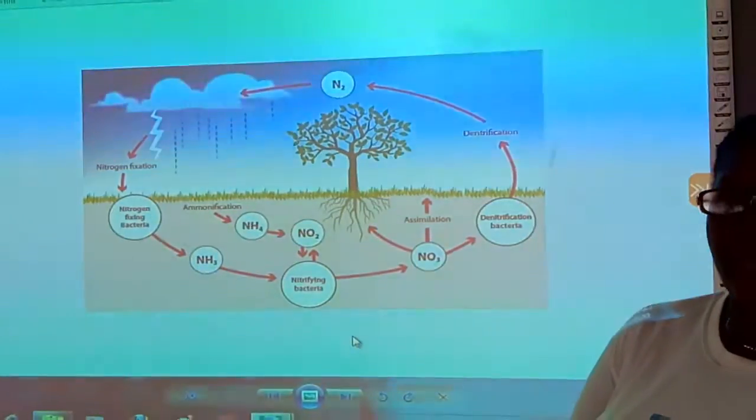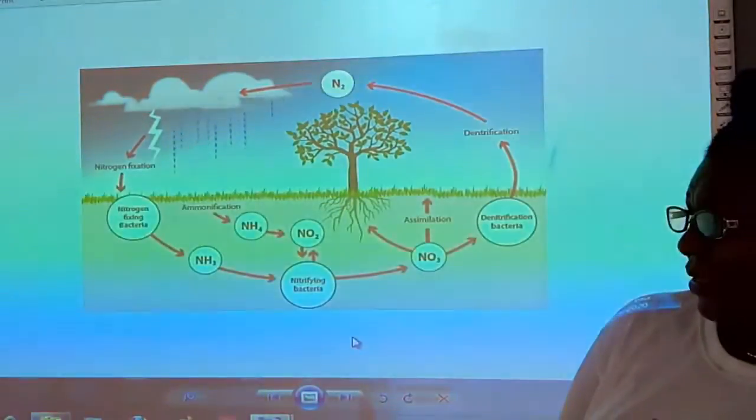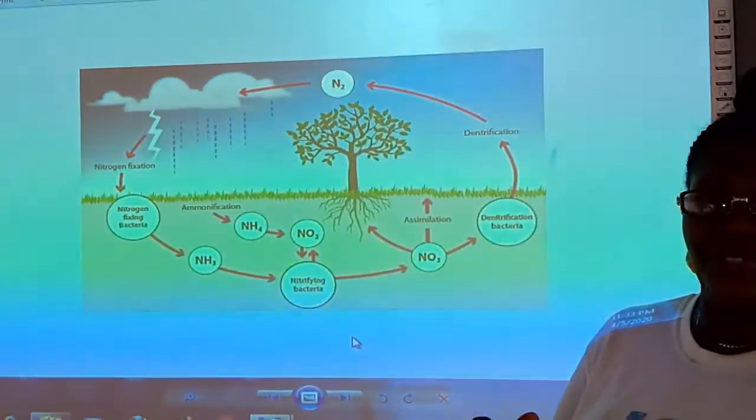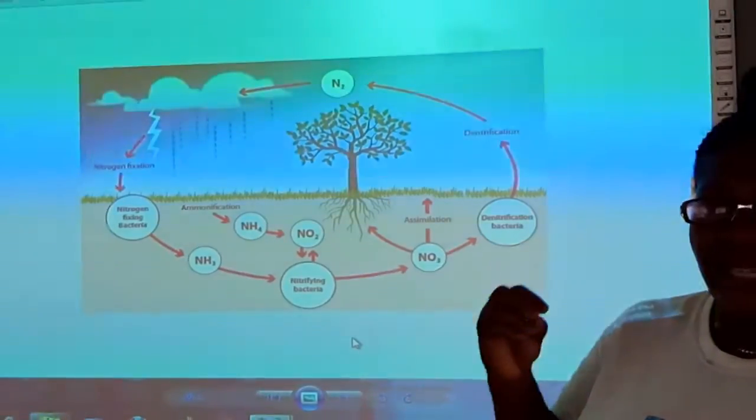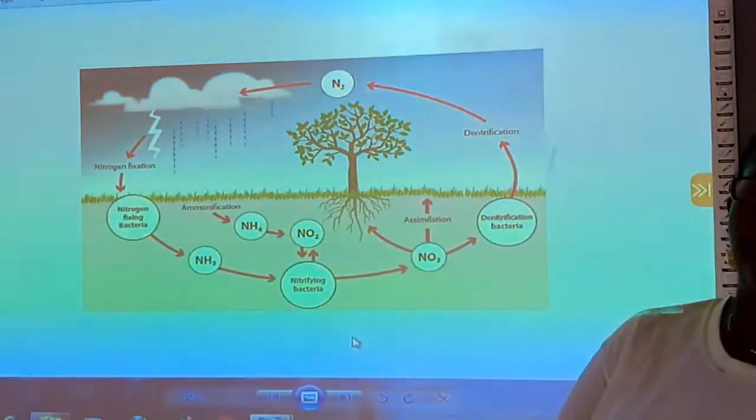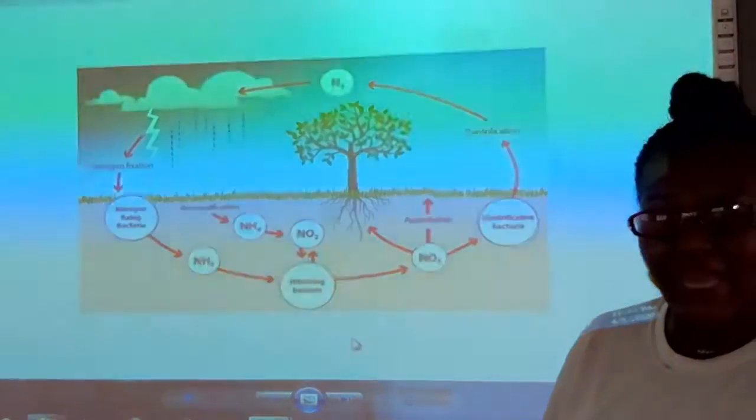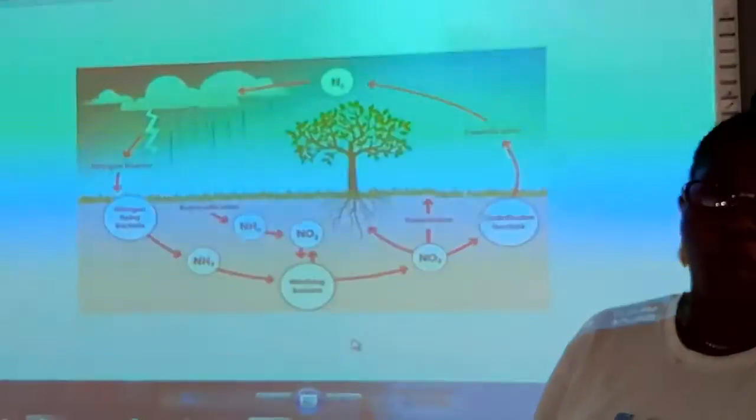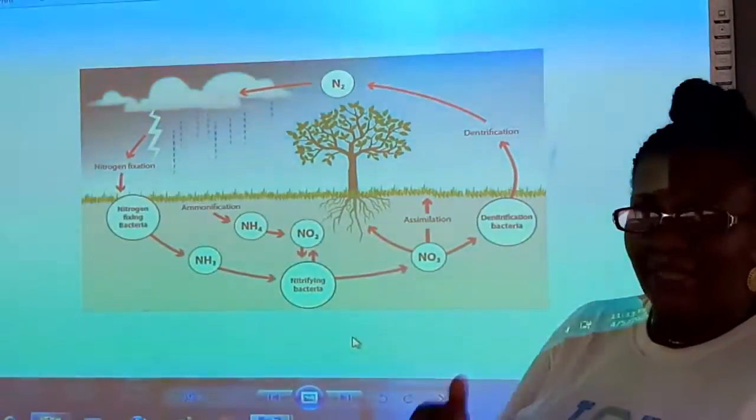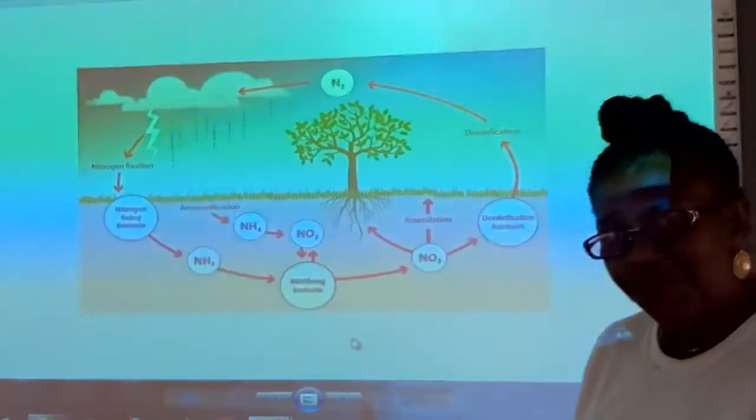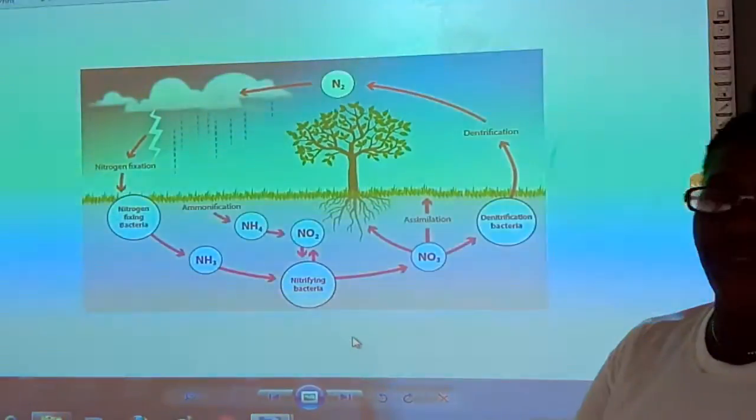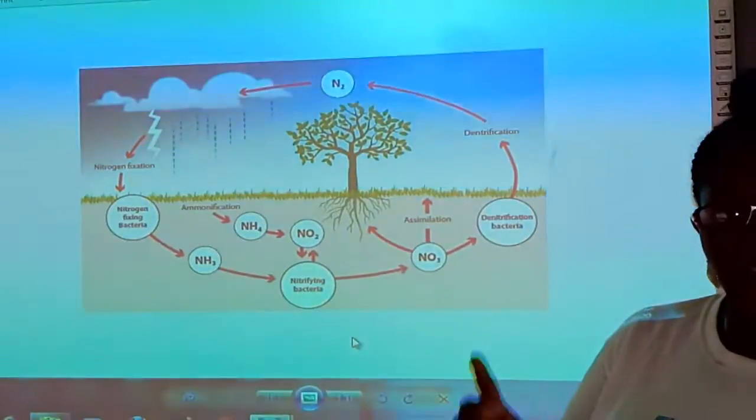We are going to be talking about nitrogen cycle in four stages. The first stage is nitrogen fixation. The second stage is putrefaction or what we call ammonification. The third stage is nitrification and the fourth stage is denitrification.